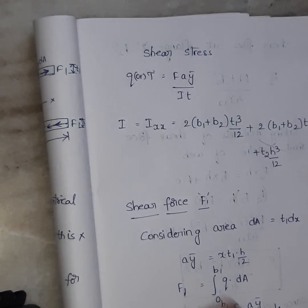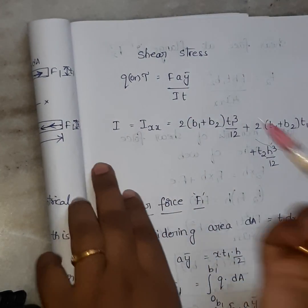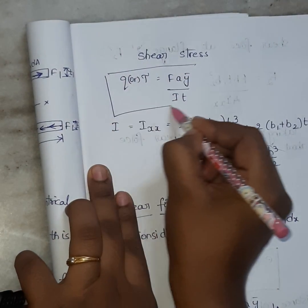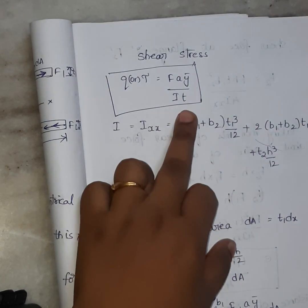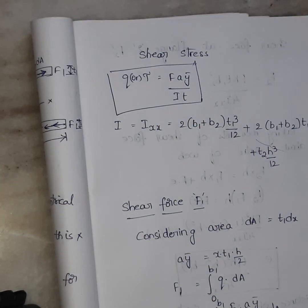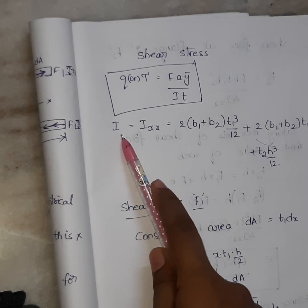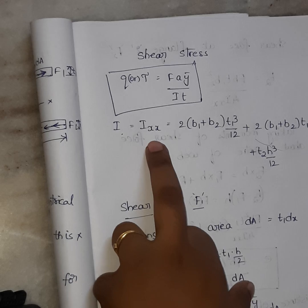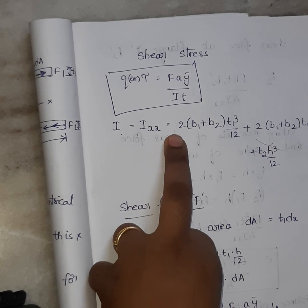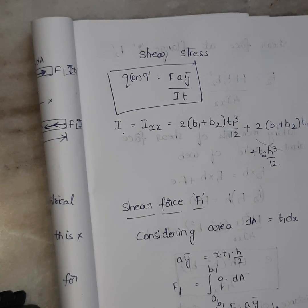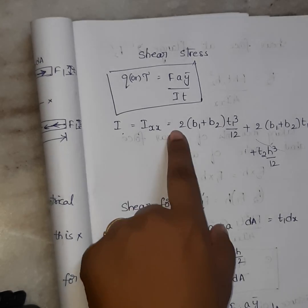We already know shear stress calculation. This is the formula. Tau is equal to F A-bar into IT. F is force, A is area, Y-bar is distance. Next, I is nothing but moment of inertia. See here, moment of inertia. General one, I-section, B D cube by 12.